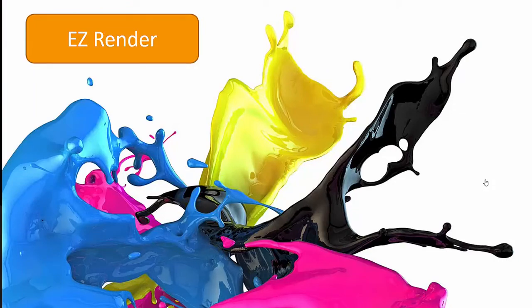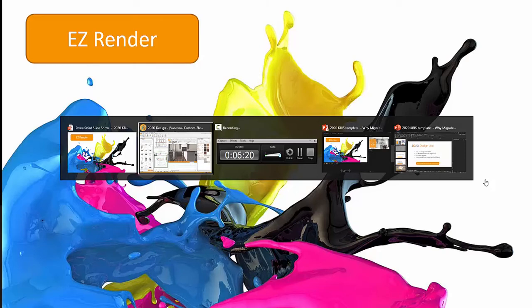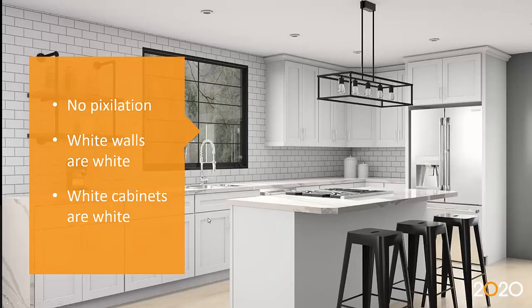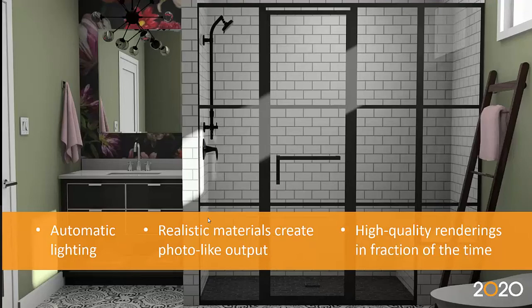Easy Render is the latest rendering engine introduced in 2020 Design Live, and it brings a lot more efficiency for end users. These are some of its benefits: you'll have no pixelation, white walls will appear white and white cabinets will appear white as well — which was somewhat of a challenge with our previous rendering engine. We've also remastered the default settings, so whenever you bring up a perspective, the lighting that comes up by default is already looking great. You can focus on your design style without worrying too much about adding additional lights.